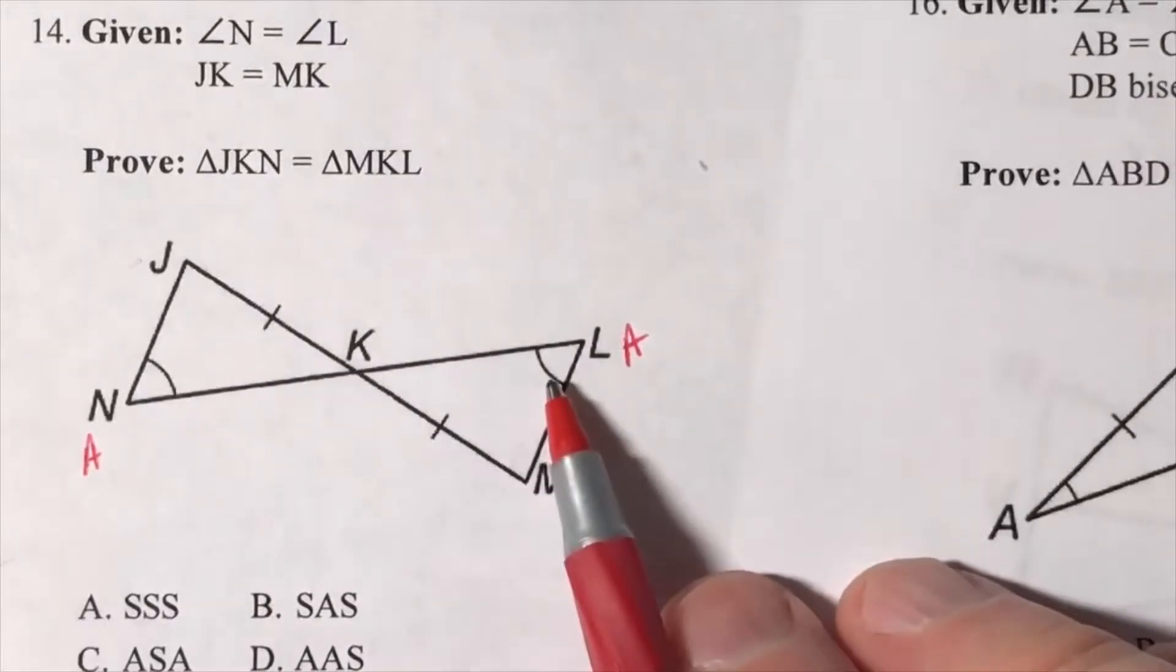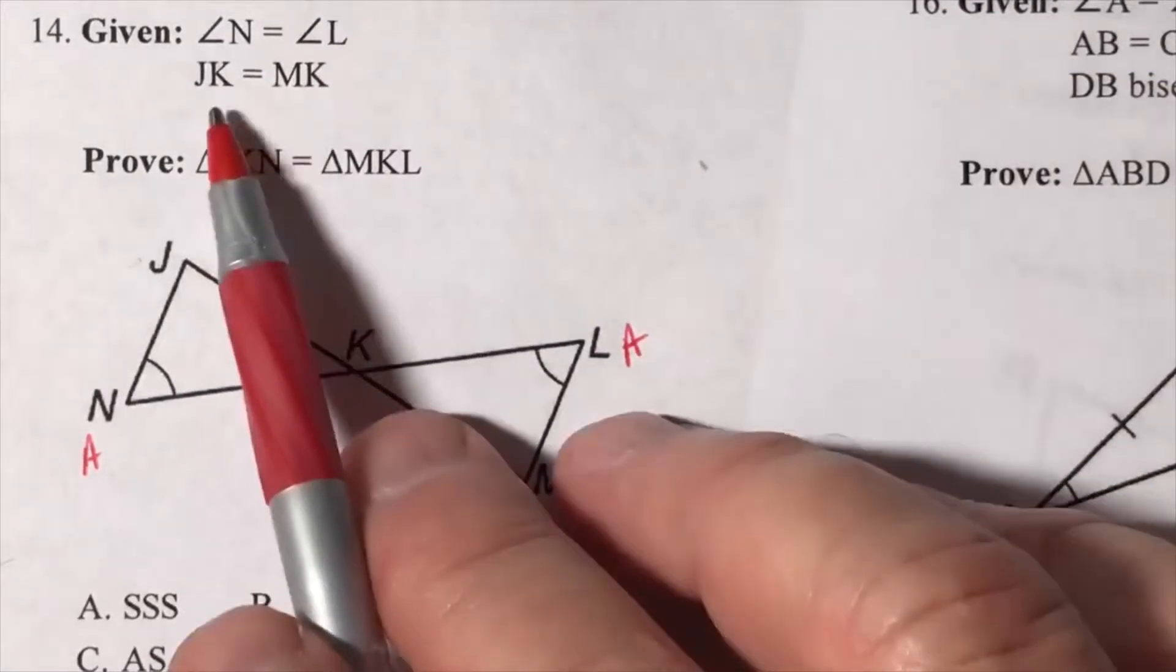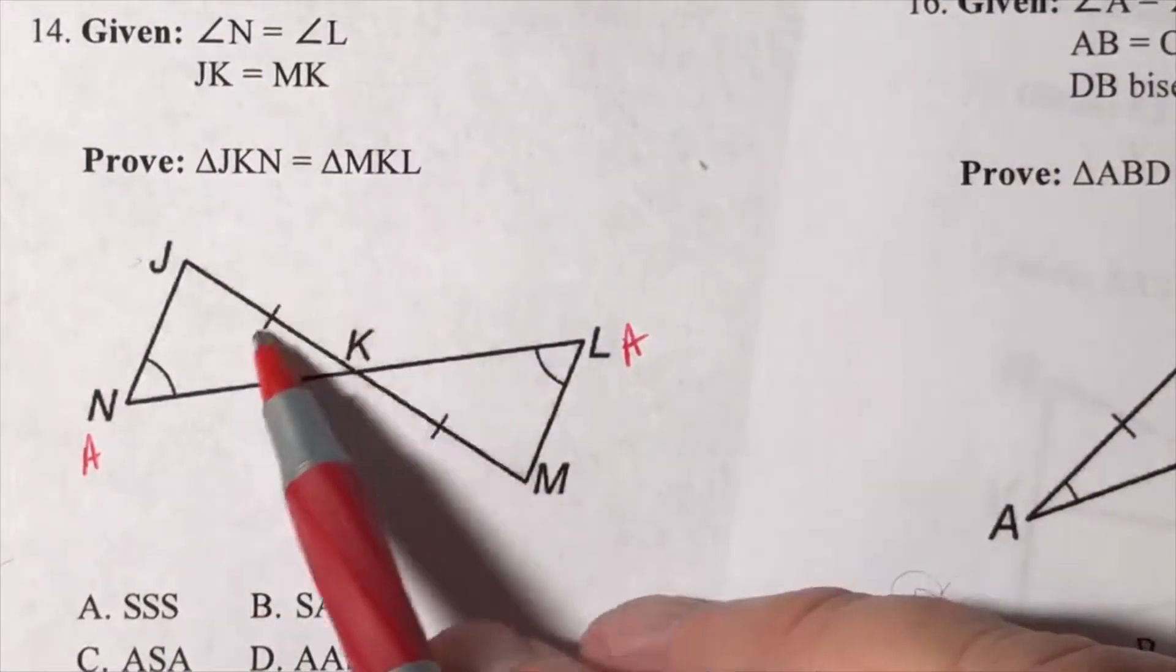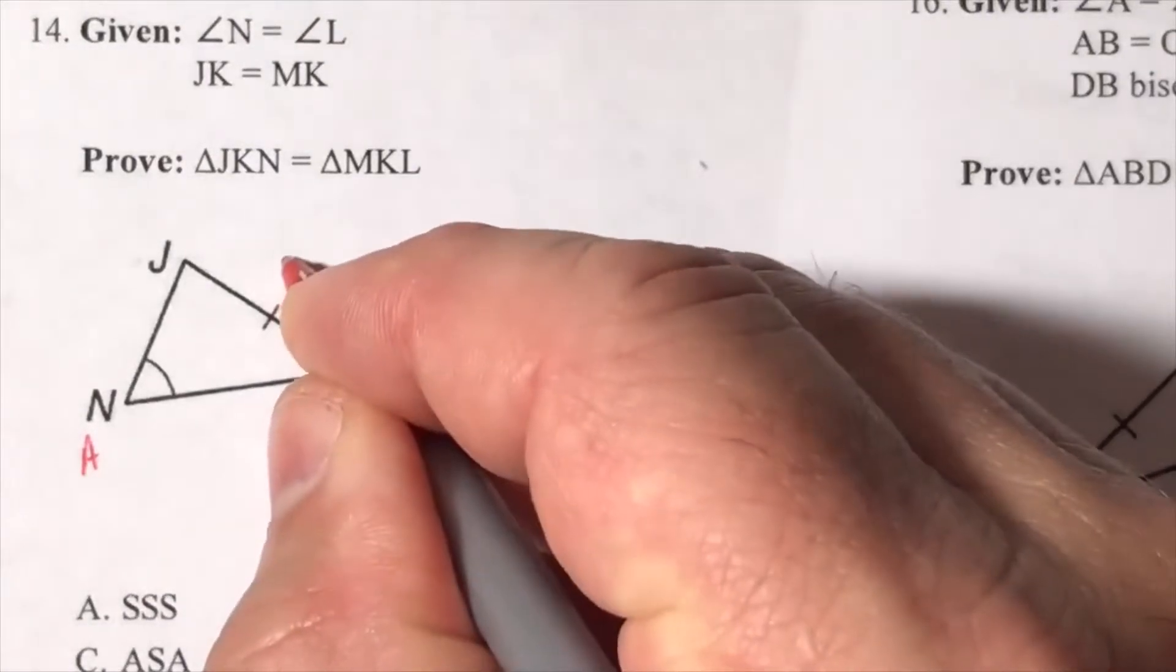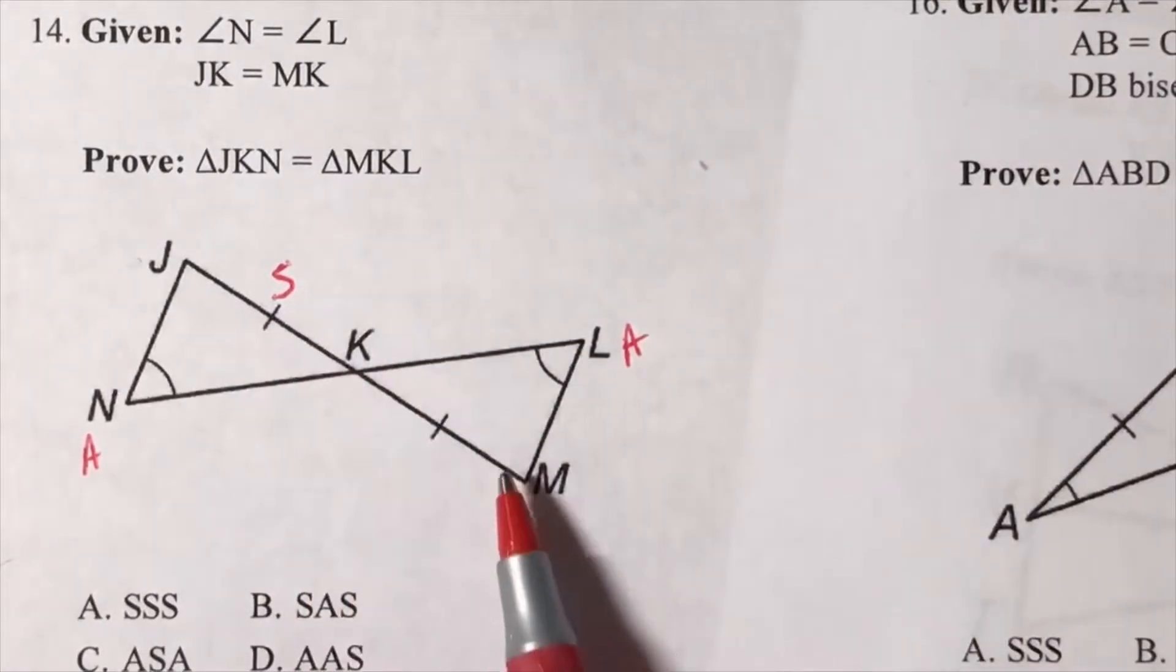Next thing we get, JK is equal to MK. It's already got us a mark, so it's going to be a side. So I have a side developing now.